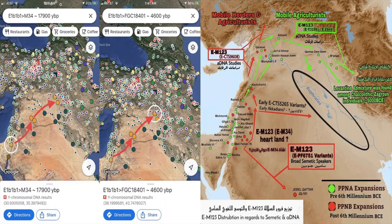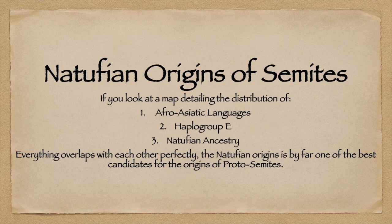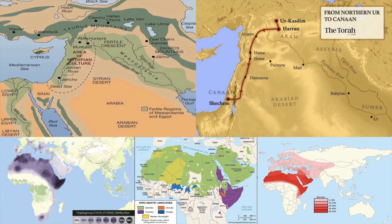We can see them dispersing throughout other parts of the Near East, going into Arabia, the Horn of Africa, and North Africa. If you look at a map detailing the distribution of Afro-Asiatic languages, haplogroup E, and Natufian ancestry, everything overlaps with one another perfectly. The Natufian origin is by far one of the best candidates for the origins of proto-Semites. Haplogroup E distribution, Afro-Asiatic and Semitic distribution, and Natufian ancestry distribution all overlap — it is likely that haplogroup E is Semitic and Afro-Asiatic, and Natufian ancestry represents the autosomal DNA of a proto-Semite.